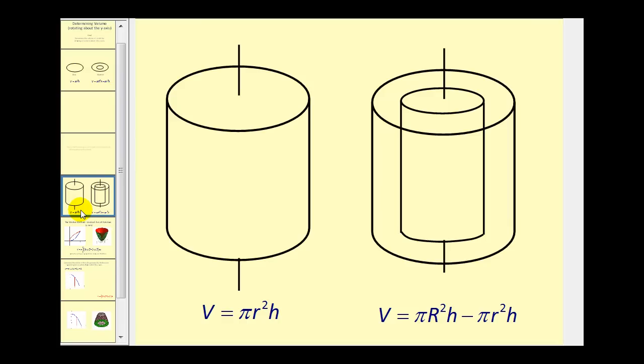Just to review, the disk method is based upon determining the volume of cylinders, which can also be called disks, where the volume is equal to pi r squared h, where r is the radius and h is the height. If the rotation is about the y-axis, the height would be equal to delta y.